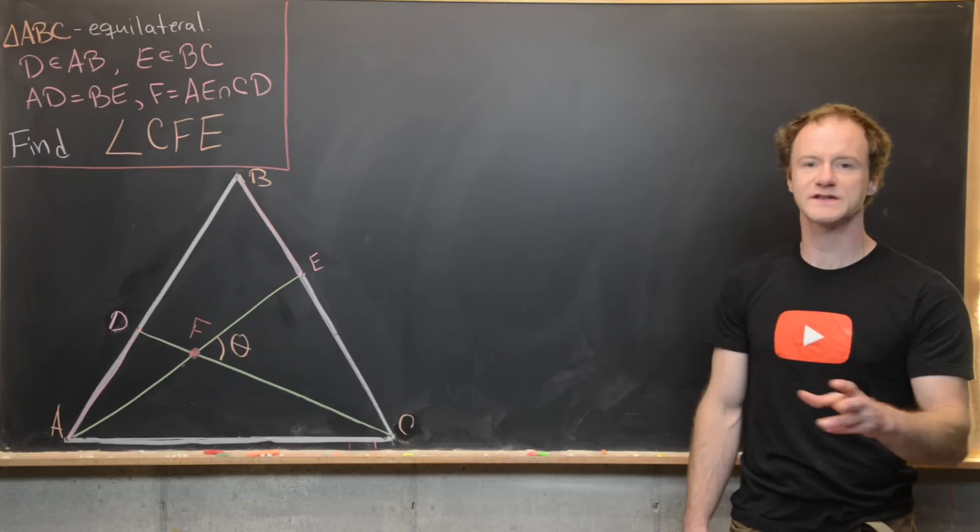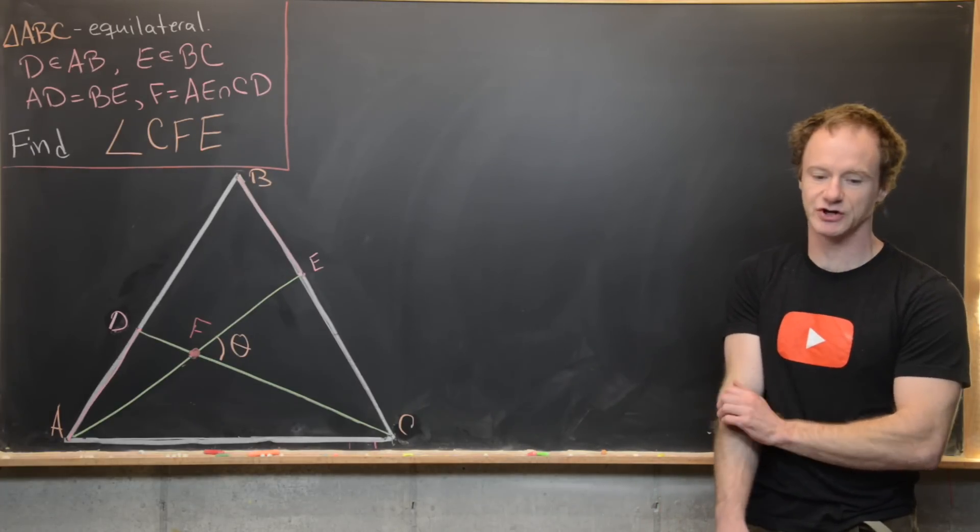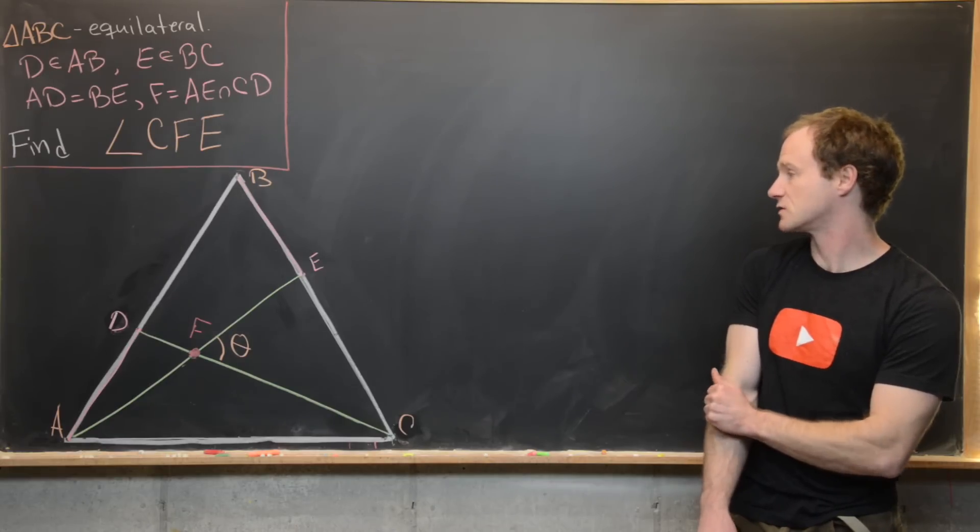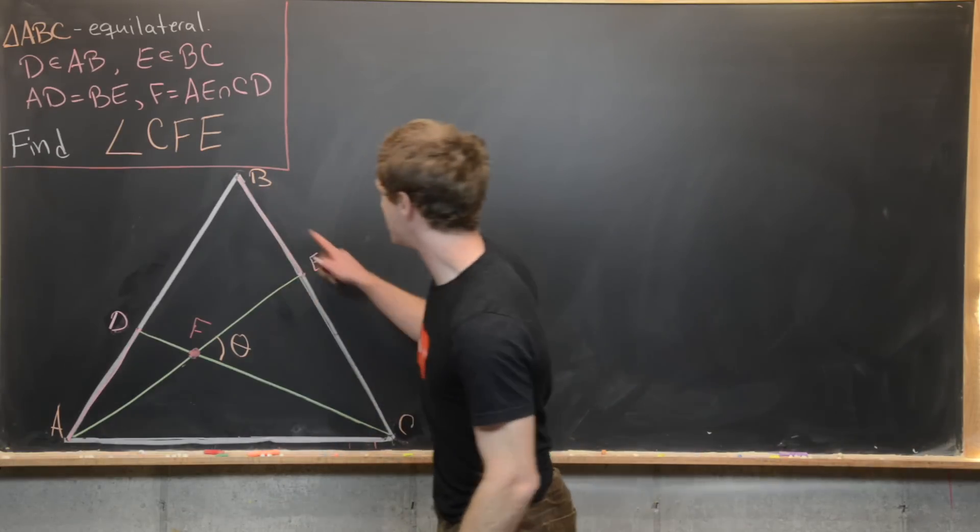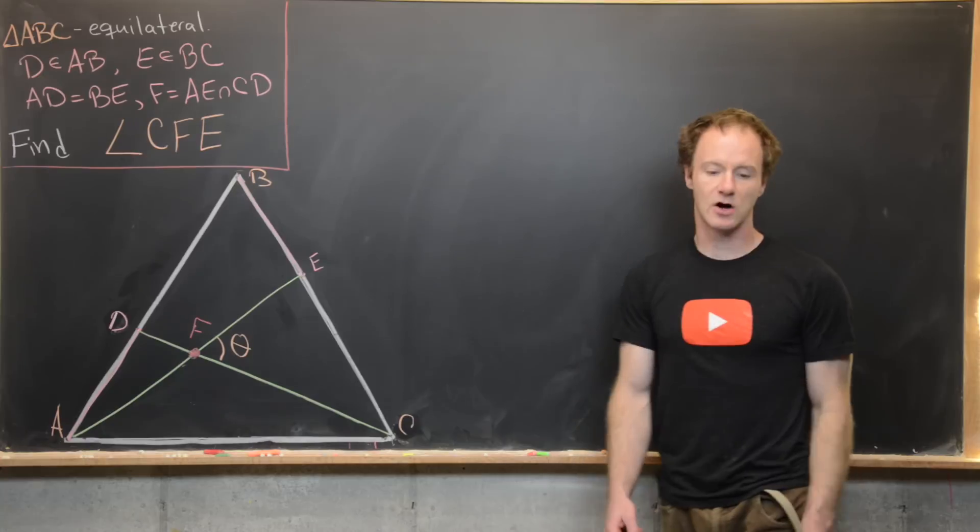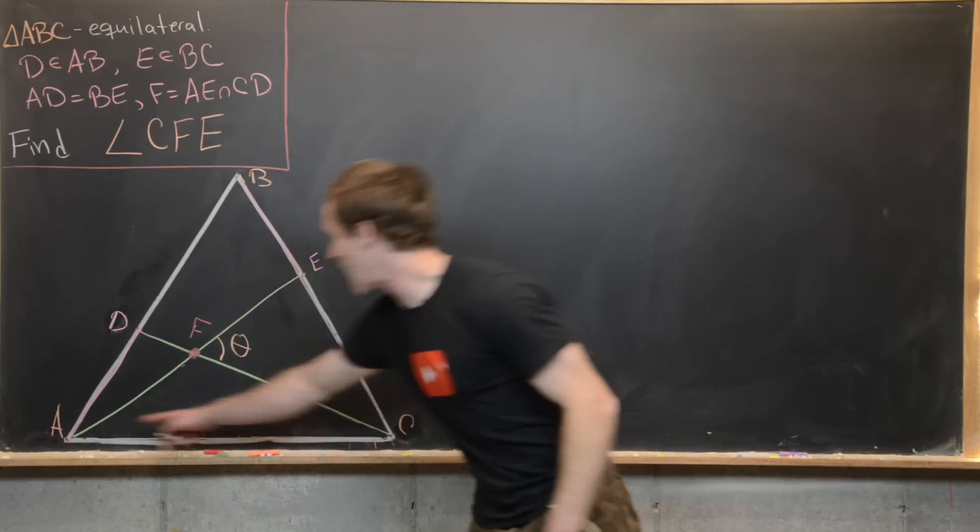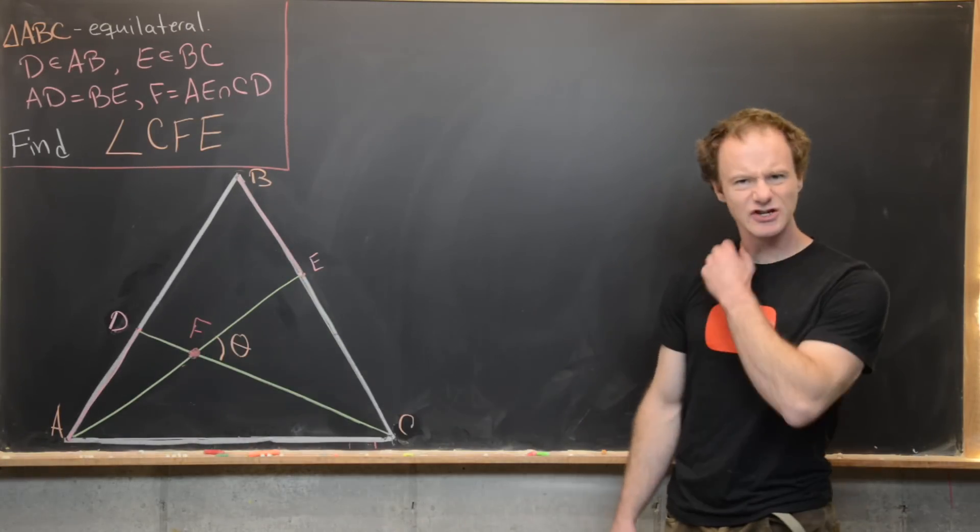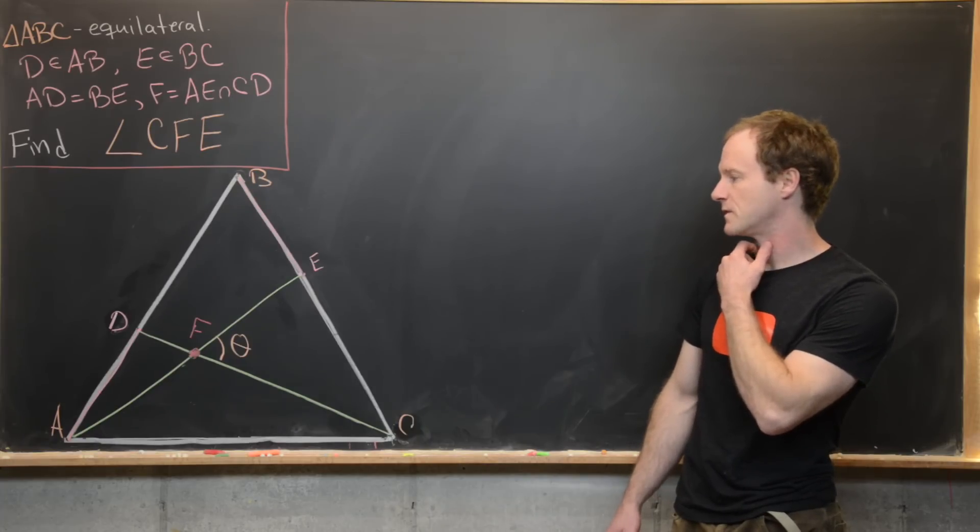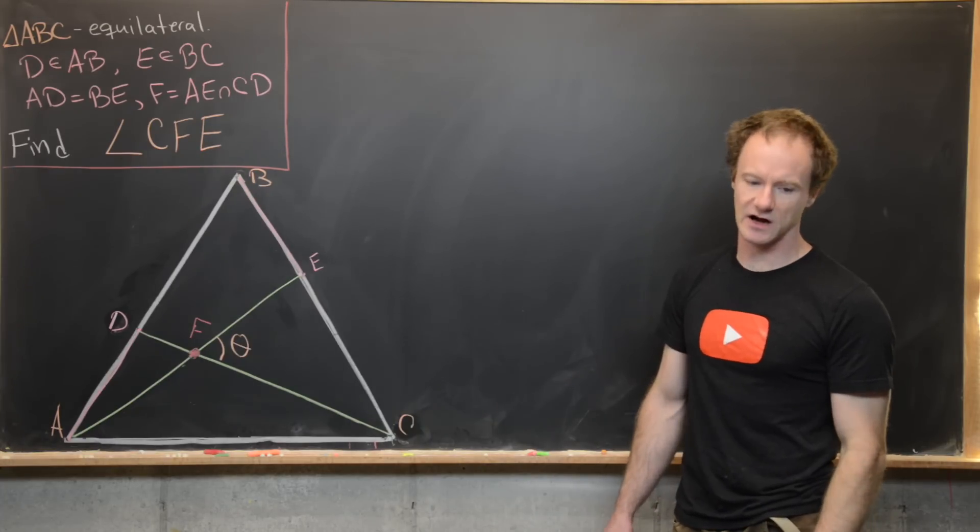So we're going to focus on two small triangles that make up this picture. And those two small triangles will be triangle ABE and also triangle CAD. And actually those triangles seem to be congruent. And so let's see if we can prove that carefully.